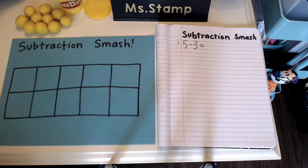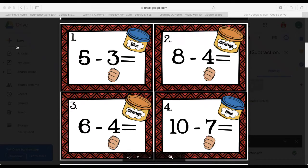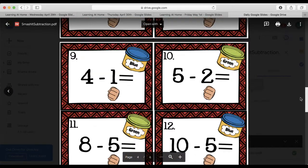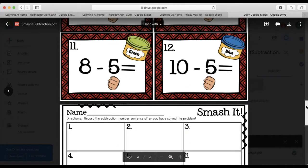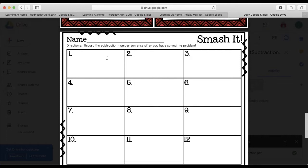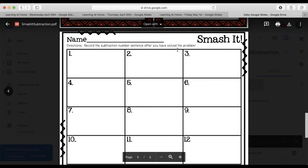First I'm going to show you what you can use that's on the PowerPoint on the Google slides. If you have a printer at home, you can print these cards that are going to have problems for you to do, subtraction problems. There are 12 problems and you can also print this sheet at the bottom where you can record your problems.